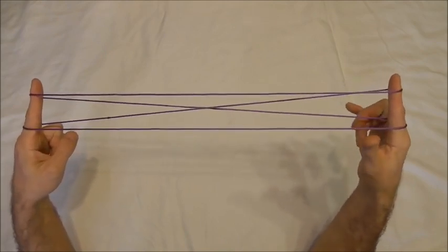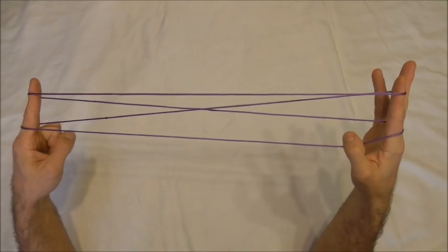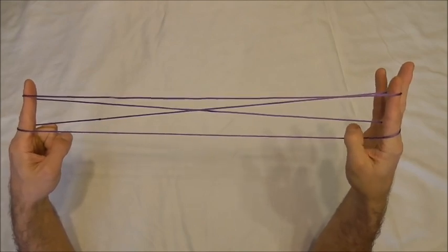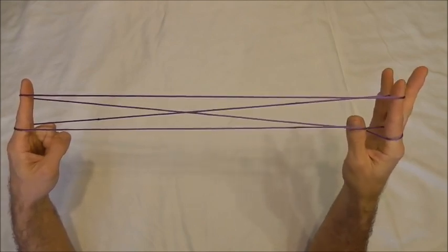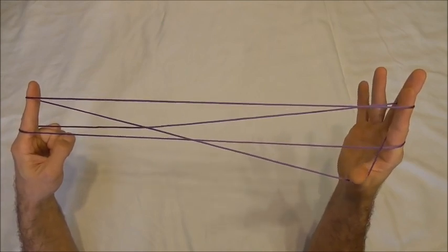Then with my left thumb I want to pull down the lower near pointer finger string and collect onto the back of my thumb the far lower pointer finger string.